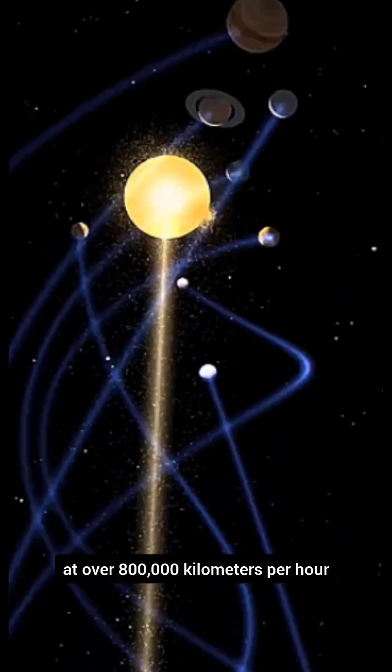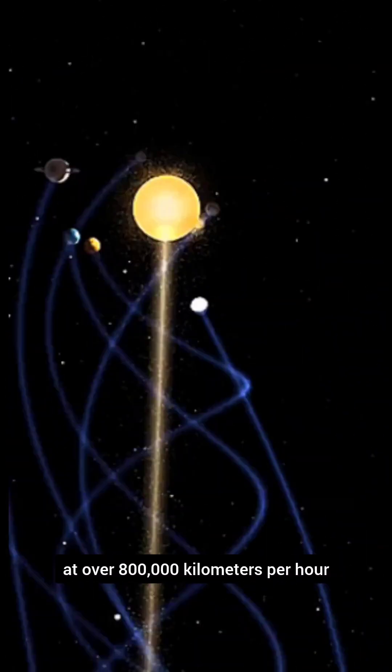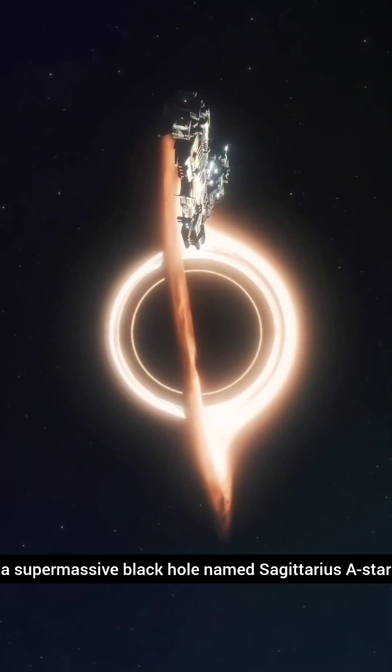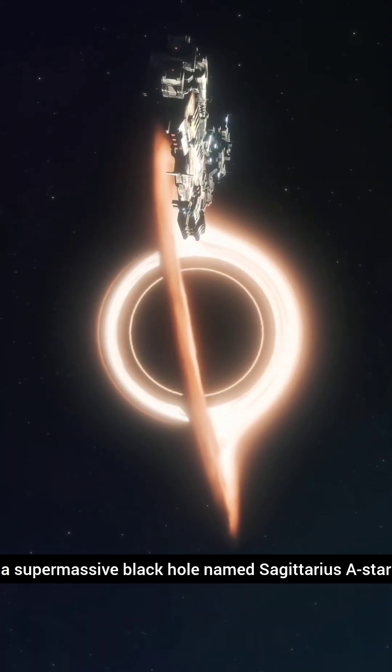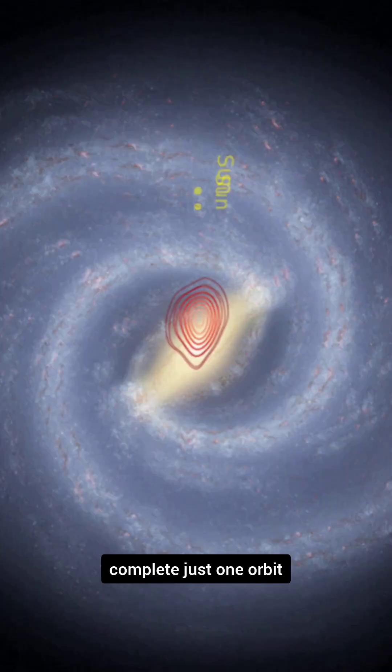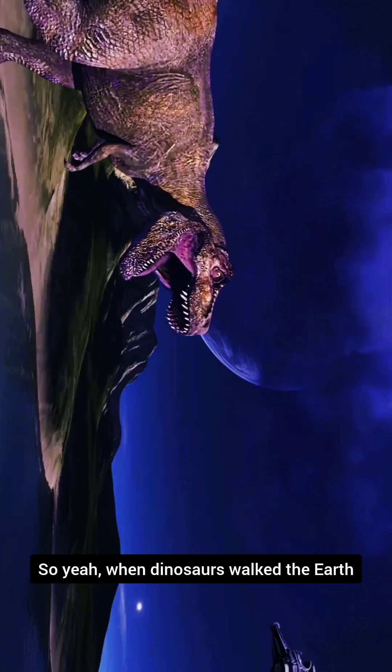At over 800,000 kilometers per hour, we're orbiting around the galactic center, a supermassive black hole named Sagittarius A*. And it takes nearly 230 million years to complete just one orbit.